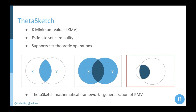For those of you who don't know what K Minimum Values, or KMV, is: it's an approximation algorithm where K defines the number of elements you store in your sample. We are talking about an approximation algorithm — you don't need to store all the elements, you store only a sample of them.